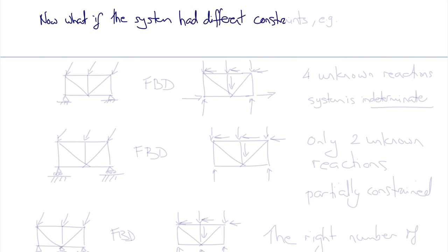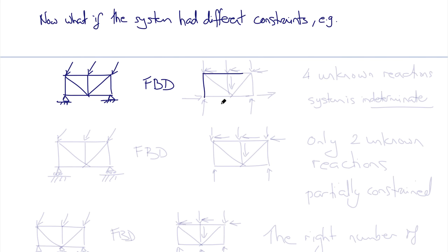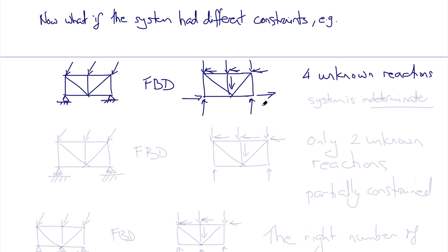But what if the system had different constraints? If both supports were pinned without rollers, the free-body diagram would have the same applied force components and the same Ax and Ay at A, but now B also has both x and y reaction components — giving four unknown reactions and only three equations, so the system becomes indeterminate.